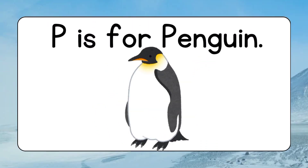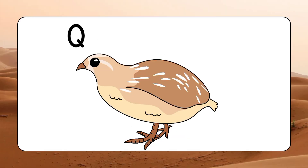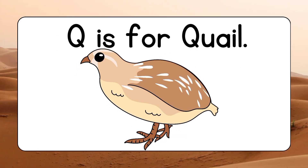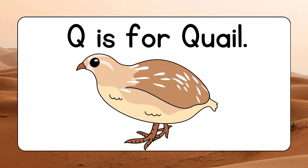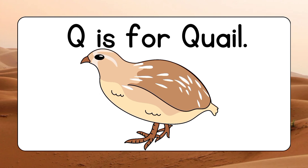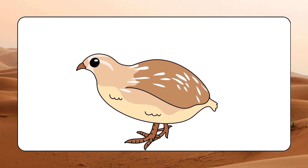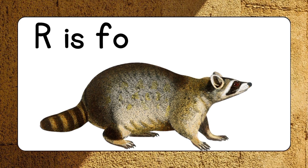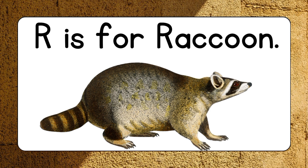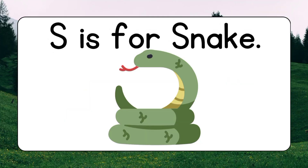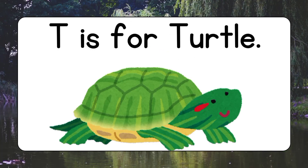P is for Penguin. Q is for Quail. R is for Raccoon. S is for Snake. T is for Turtle.